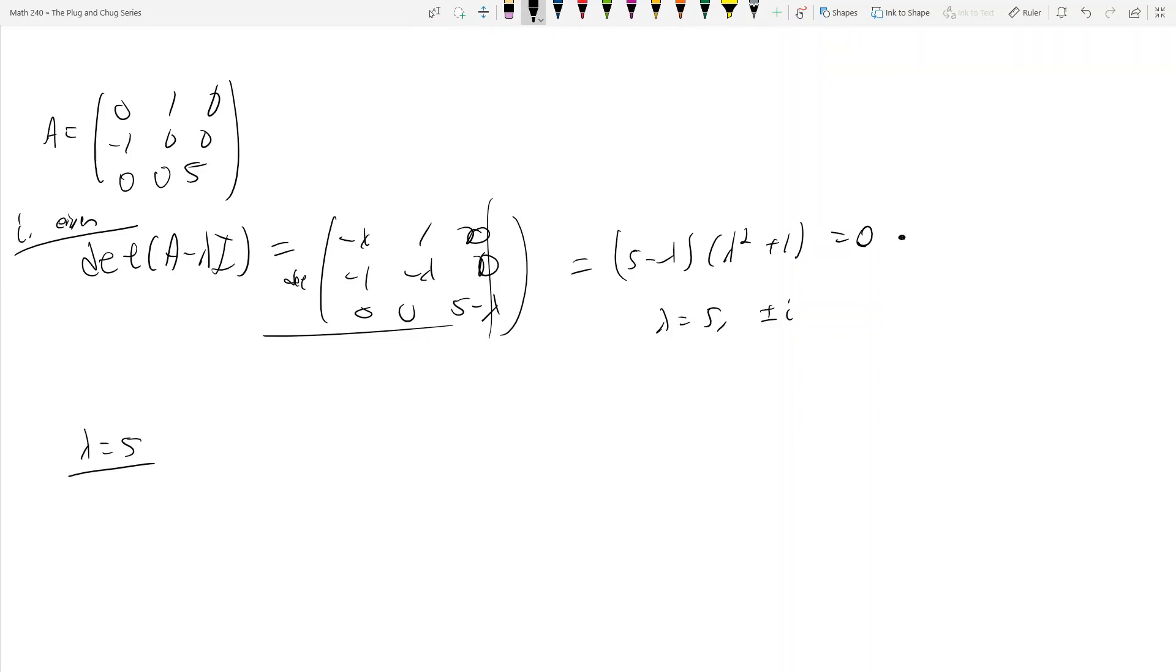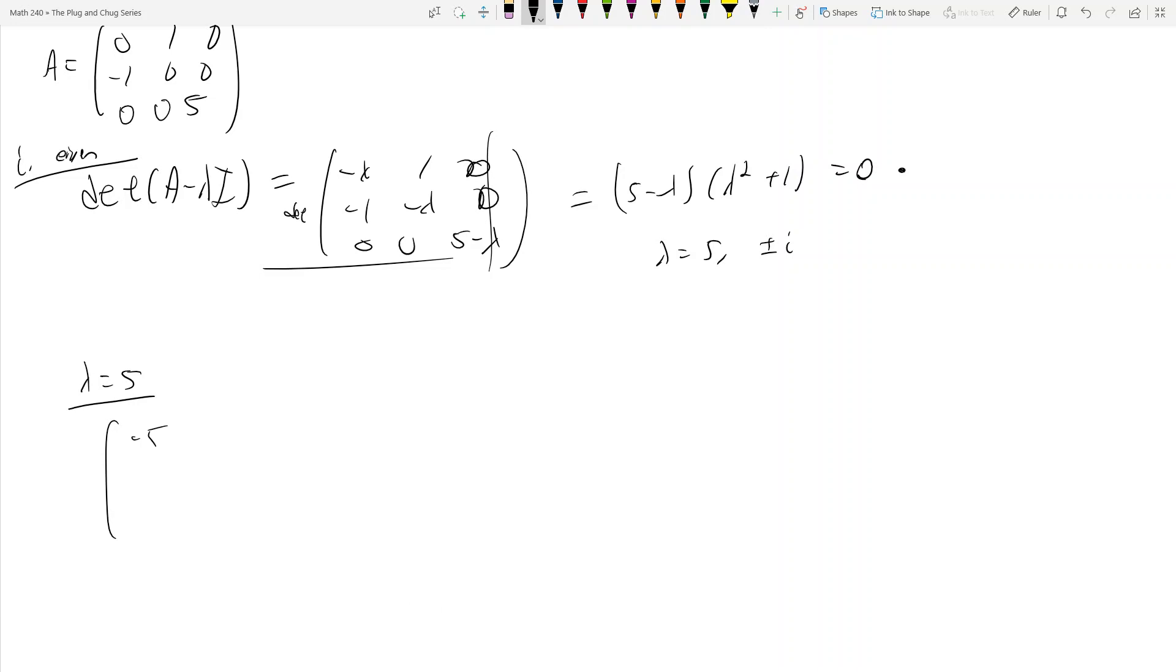So let's do lambda equals 5 first because this will be easier. Negative 5, 1, 0, negative 1, negative 5, 0, 0, 0, 0, okay, cool.